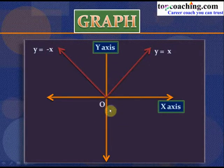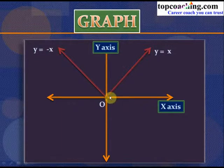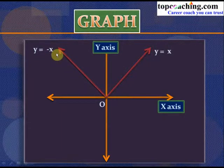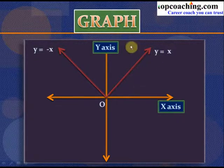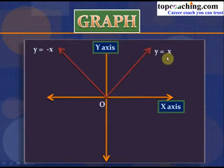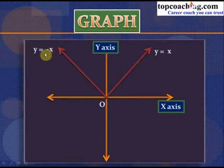y = |x| is never negative. The graph of y = |x| can be broken into two parts: y = x for x ≥ 0, and y = −x for x < 0.